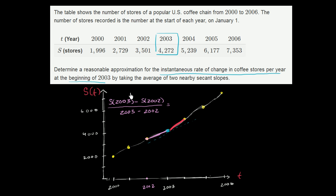And so what is this going to be equal to? In 2003, we have 4,272 stores. In 2002, we have 3,501. It's going to be that over, well, the denominator is just 1. So this is going to simplify to 4,272 minus 3,501. 2 minus 1 is 1. 7 minus 0 is 7. 42 minus 35 is 7. So this is equal to 771. So their average rate of change from 2002 to 2003 was 771 stores per year.